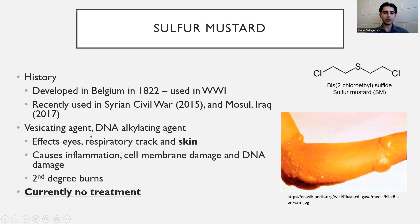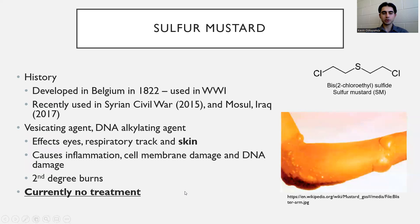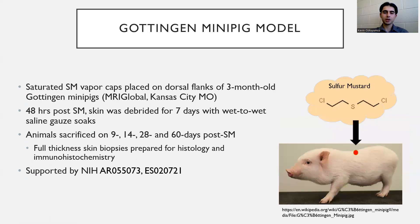It is a vesicating agent as well as a DNA alkylating agent affecting the eyes, respiratory tract, and the skin — which I'll be discussing — where it causes second degree burns and blister formation, as shown in the image on the right. There is currently no treatment against sulfur mustard exposure, therefore it's important to research it to develop proper countermeasures against it.